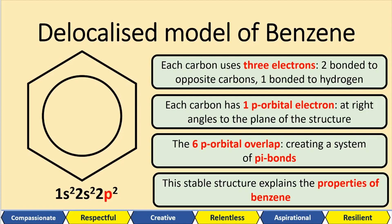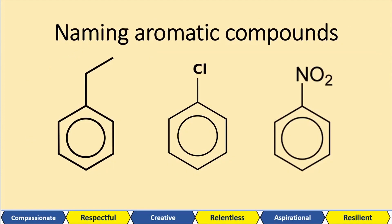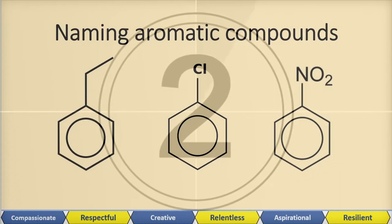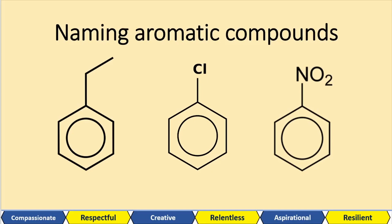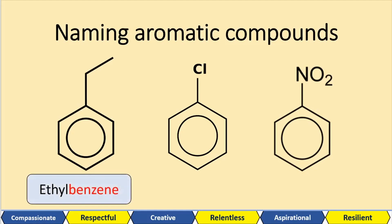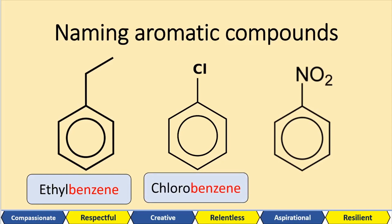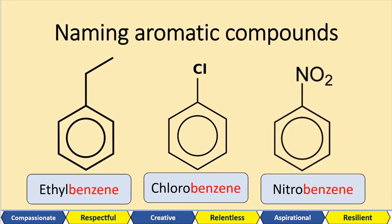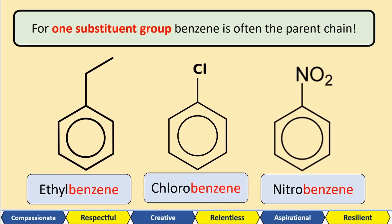What I'd like you to do now — just have a guess at naming these aromatic compounds. This first one — remember each kink is a carbon — we've got two kinks, so that's an ethyl group attached to benzene: we call it ethylbenzene. Here, the group we've got is chlorine, so this is going to be chlorobenzene. And here we've got a nitro group, so we're going to call this one nitrobenzene. This is for when you've got one substituent group — the parent group is usually benzene if you've only got one substituent.